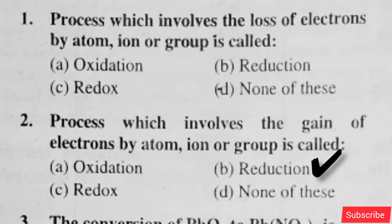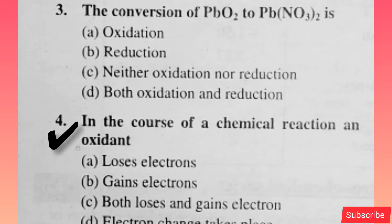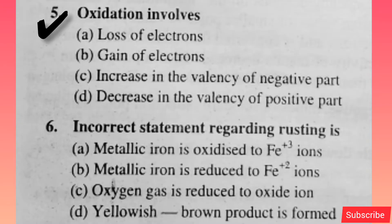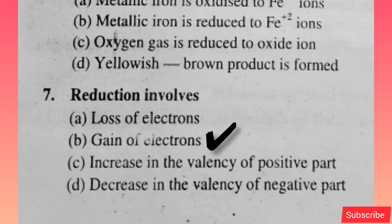The conversion of PbO2 to Pb(NO3)2 is option B is right, in the course of a chemical reaction. An oxidant — option B is right. Oxidation involves loss of electrons — option A is right. Incorrect statement regarding rusting is option B is right. Reduction involves — option B is right.